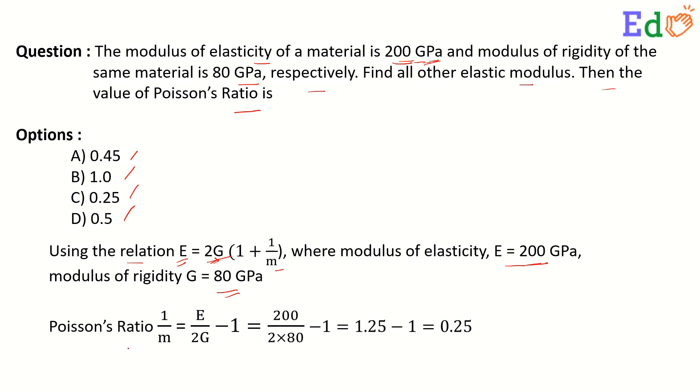From this equation, we get the Poisson's ratio 1 by M is equal to E by 2G minus 1. If we put these values of E and G here, we get the value at last 0.25.